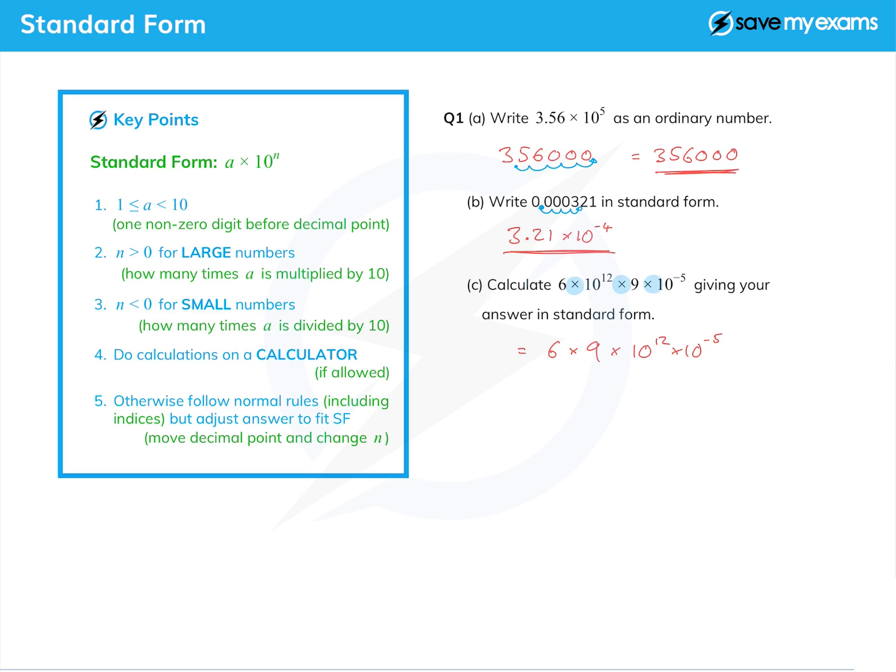I'm allowed to rearrange things because all the signs are multiplying. So what's 6 times 9? Well, your table should tell you that 6 times 9 is 54. And then we need our laws of indices. We're multiplying, so we're going to add these two powers together.